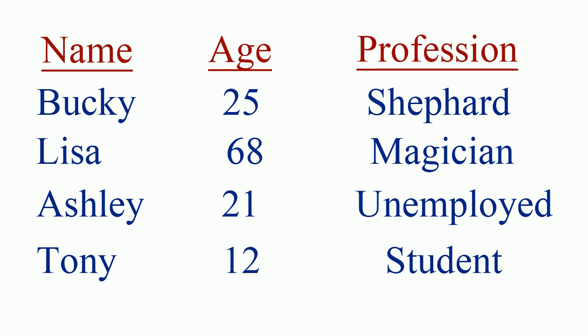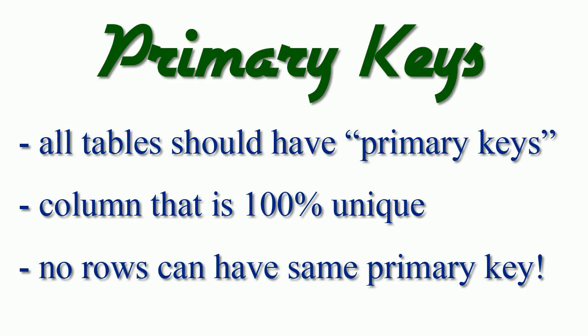Say we wanted to make a huge database to store all of the people in the United States. If we asked the database to find a person named Bucky, it might return 6,000 results. If we searched for Ashley who is unemployed, there could be thousands of those too. This isn't a really effective approach because you can have a lot of duplicate entries — instead of just making a table like this, what you need to use is a primary key.